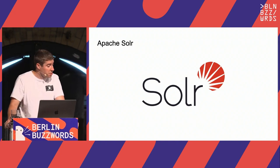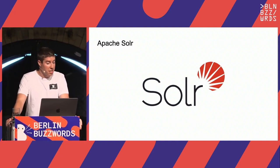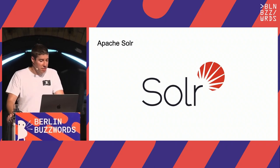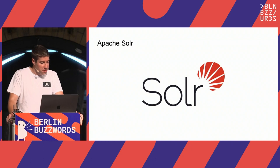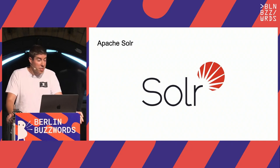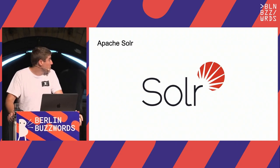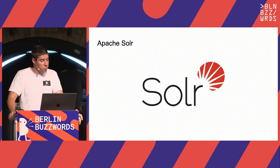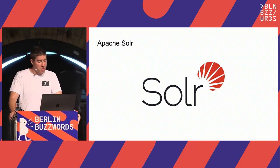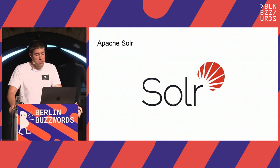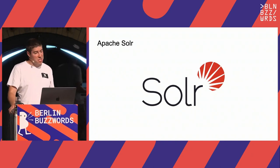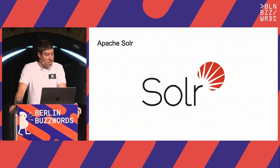Solr, if you're not familiar, is an Apache project governed by the ASF and covered by the ASF license. It's a search engine built on top of Apache Lucene, used for enterprise search, e-commerce search, site search, and all these basic text relevancy use cases. It was created in 2004, donated to the ASF in 2006, and has been a top-level project since 2007. With that 15 to 20-year history, Solr has seen a lot of change.